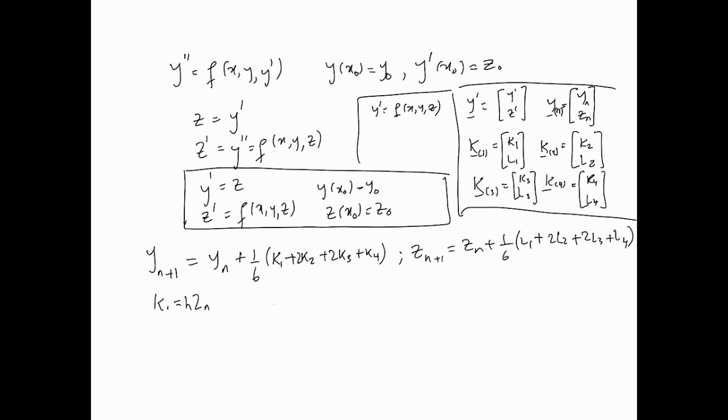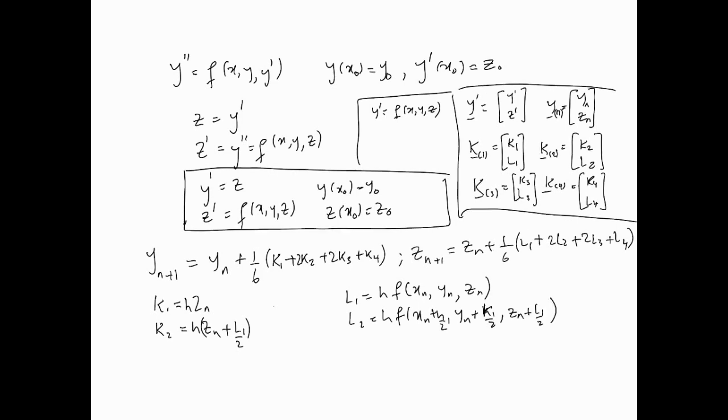Similarly, we'll have L1, which is h times f(xn, yn, zn). Let's move further. k2 is h times (zn plus L1 over 2). And L2 is h times f(xn plus h over 2, yn plus k1 over 2, zn plus L1 over 2).